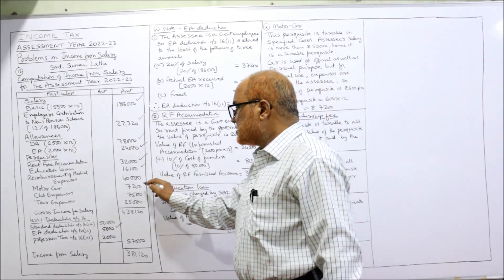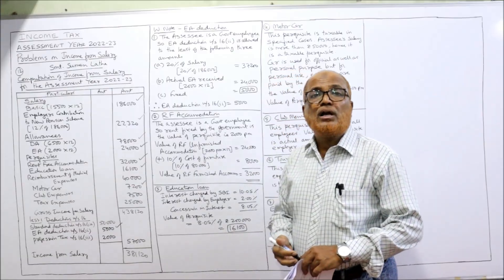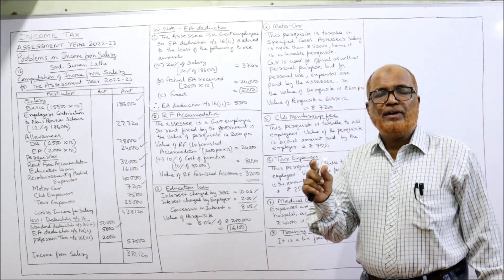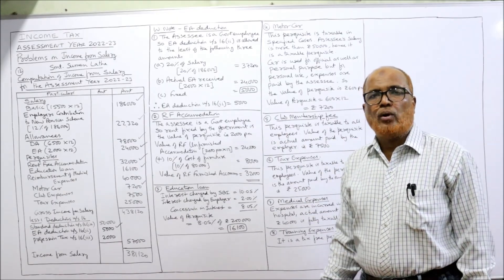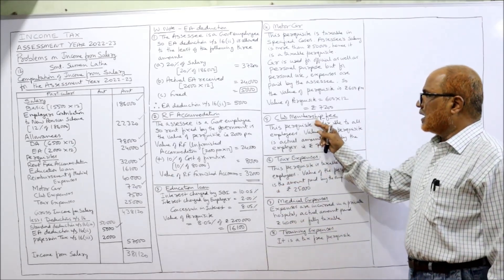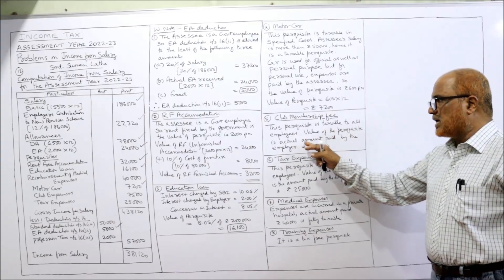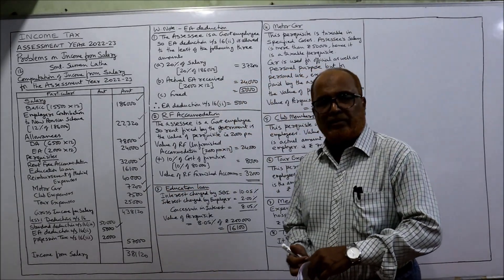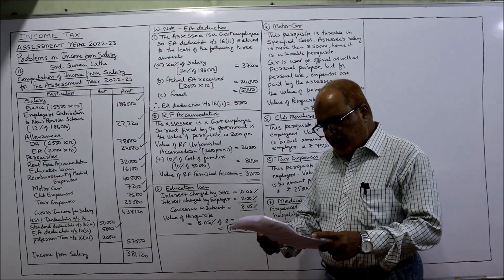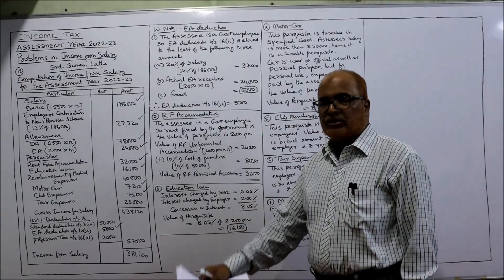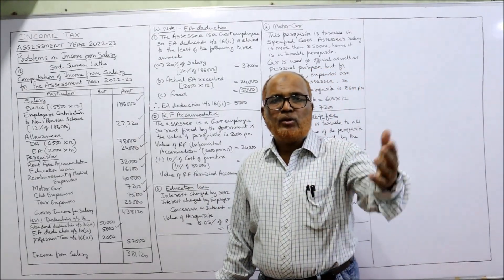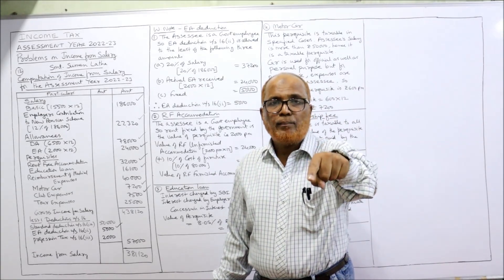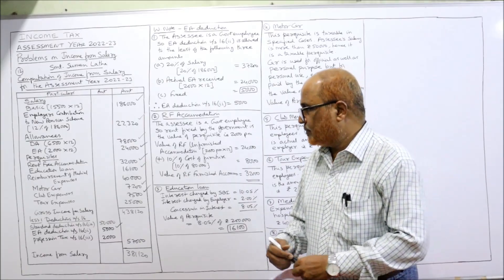Club membership fee: when the employer pays club membership fees for the family members of the employee, it is a fully taxable perquisite for all employees. The value of the perquisite is the actual amount paid by the employer, which is ₹7,500. Next, expenses paid by the employer for a private tour of family members: ₹25,000. Since the family members' private tour expenses are paid by the employer, this is an obligation of the employee met by the employer — fully taxable perquisite: ₹25,000.